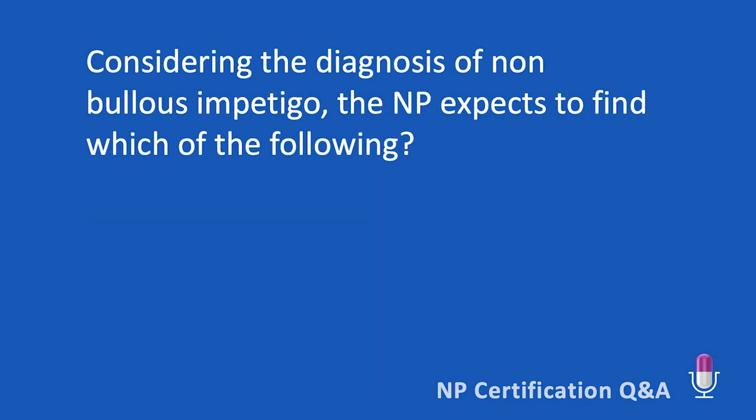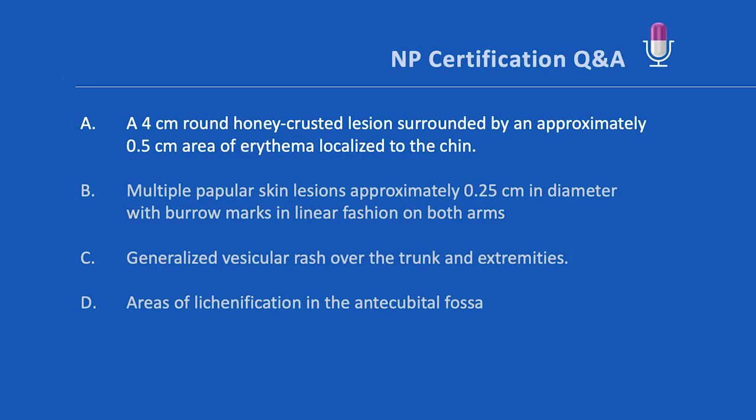Is there evidence of contagion? This child spends time in a group setting — the play group that's mentioned — where other kids have similar skin lesions. Impetigo, usually caused by Streptococcus pyogenes and less commonly by Staph aureus, is highly contagious. The contagion issue is one reason why the lesions are usually limited to skin areas not covered by clothing.